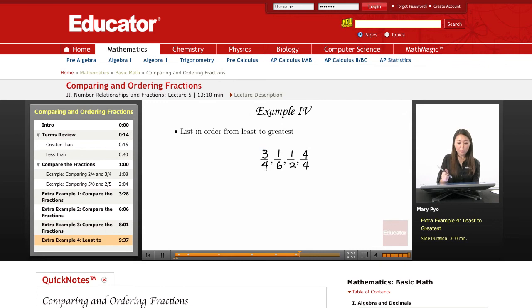Now, since we're able to compare fractions, let's see which fraction is the smallest and which fraction is the greatest. Let's look at these: three fourths, one sixth, one half, and four over four.